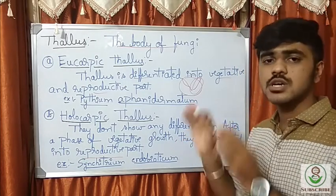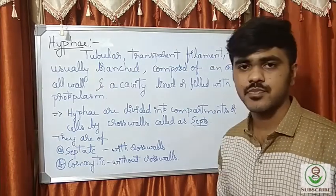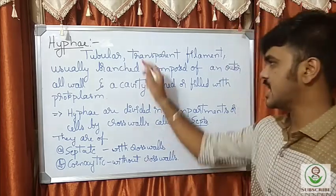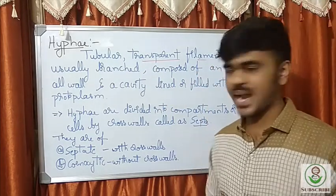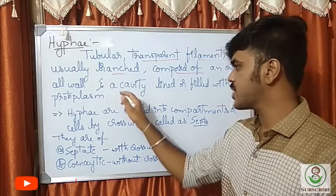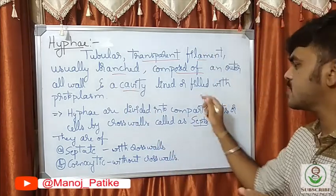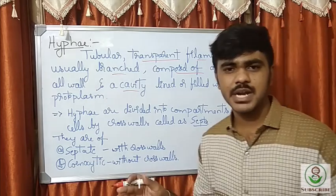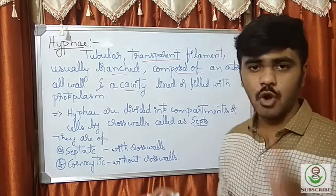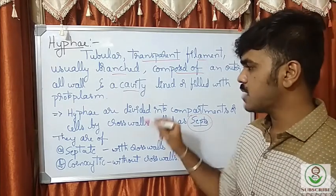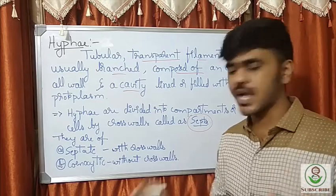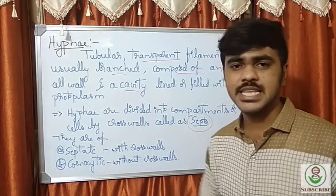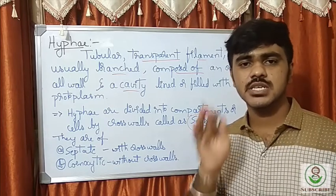Next comes hyphae. These are very filamentous — that's why fungi are called filamentous. They are tubular and transparent filaments, usually branched, and composed of an outer cell wall and a cavity lined with or filled with protoplasm. The hyphae are divided into compartments or cells by cross walls called septa. Based on this character, hyphae are classified as septate hyphae or coenocytic hyphae. Septate means they contain cross walls; coenocytic means they do not.